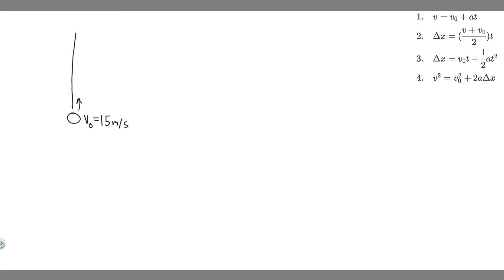In this problem, we're told to calculate the displacement and velocity at times of a) 0.5, b) 1, c) 1.5, and d) 2 seconds for a ball thrown straight up with an initial velocity of 15 meters per second. Take the point of release to be y equals 0.